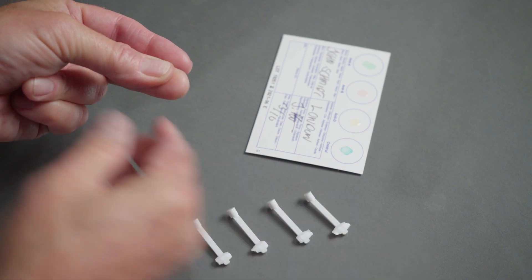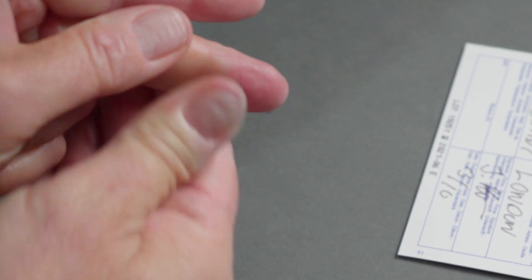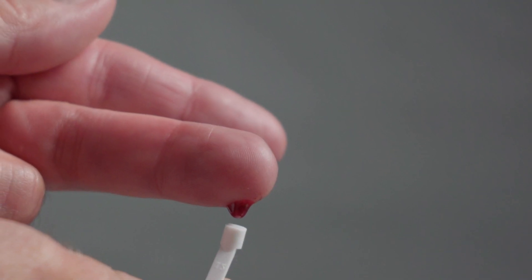Massage your finger towards your fingertip to increase blood flow. Let a large drop of blood fall onto the Elden stick.